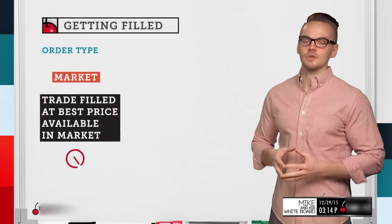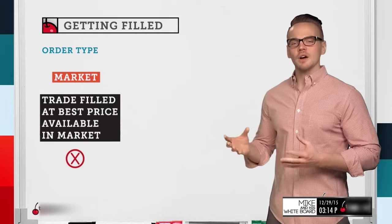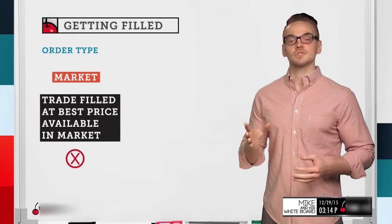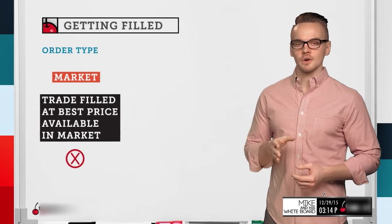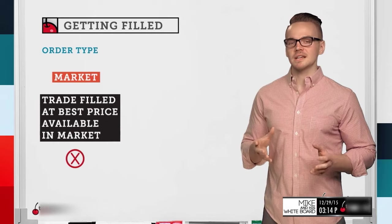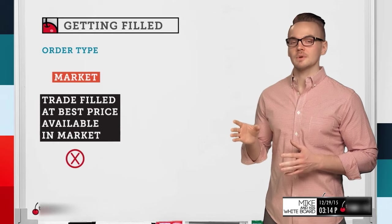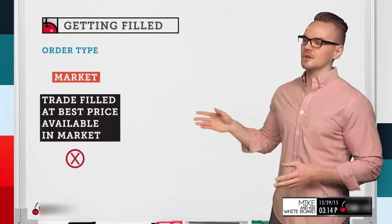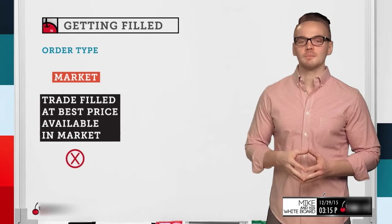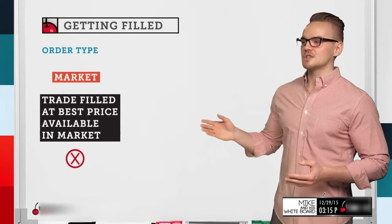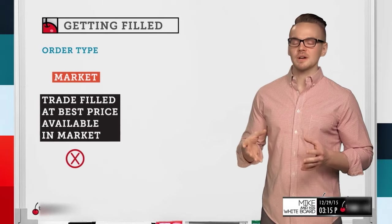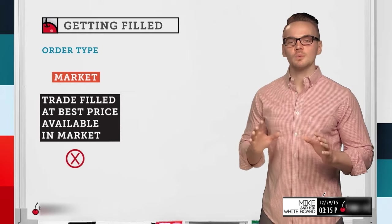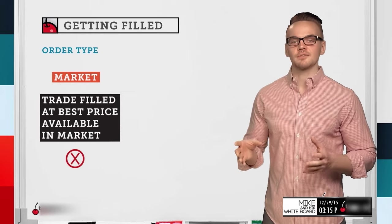Let's talk about order type first. When we're talking about order type, there are two different order types that we can route in general: a market order or a limit order. Here at TASO we usually route limit orders — we pretty much never route market orders. The definition of a market order is basically a trade that's filled at the best price available in the market, and the important thing to know is that you don't really know where the order is going to get filled.